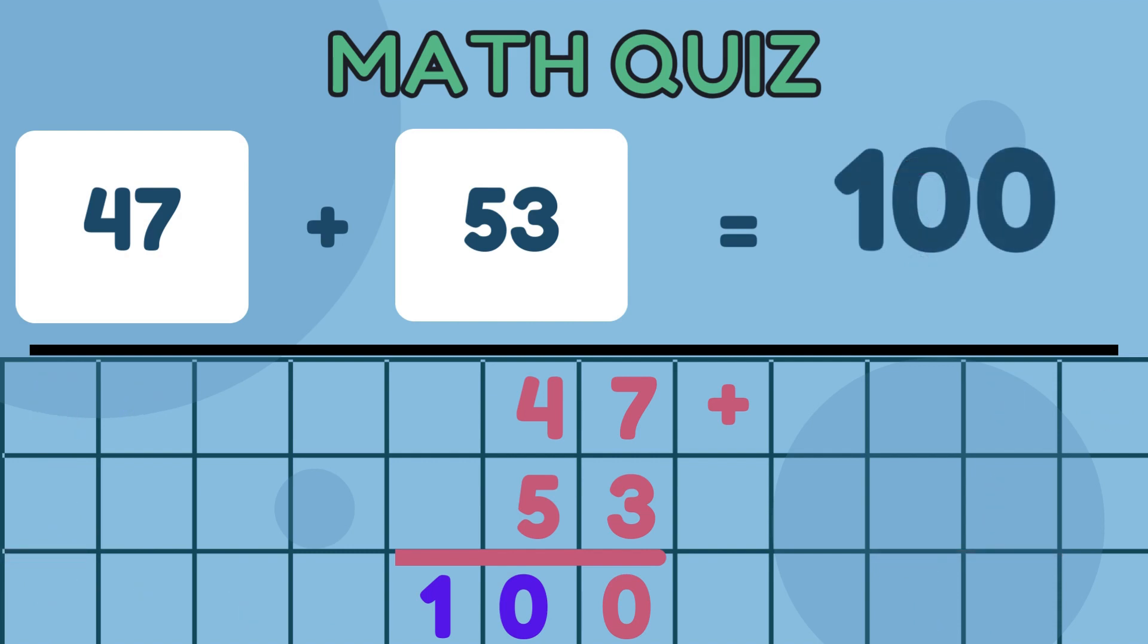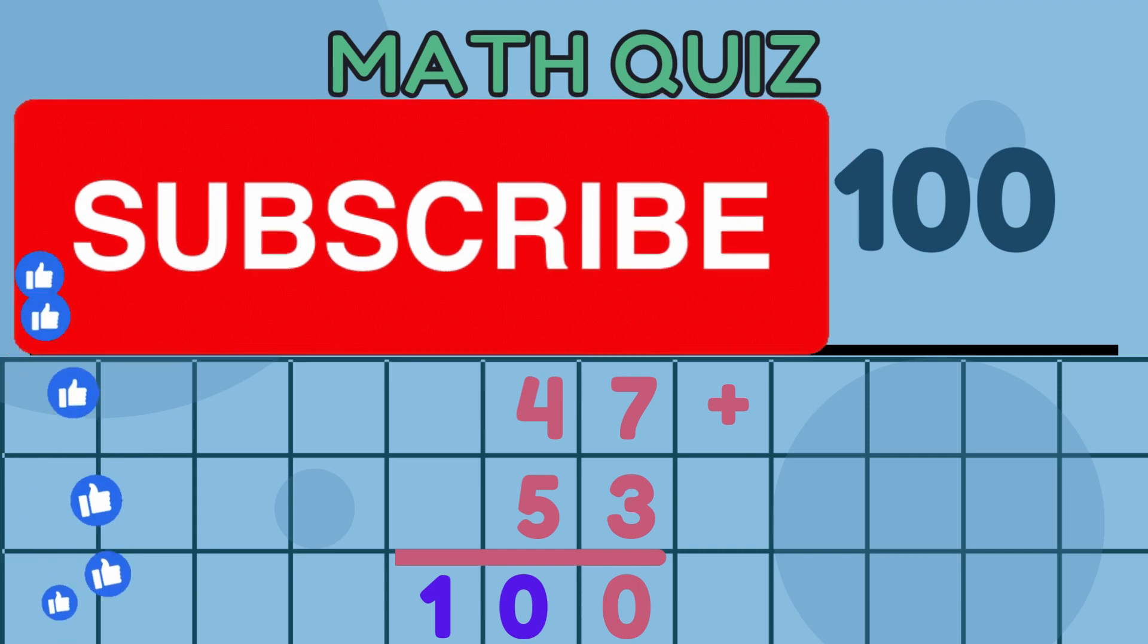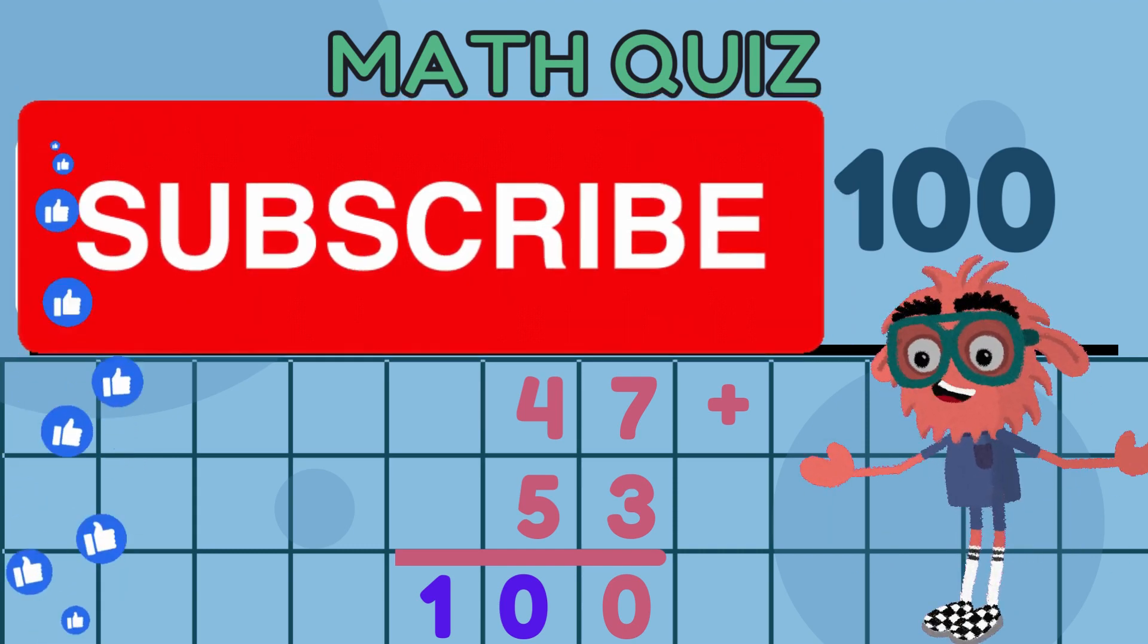That's it. Adding numbers with two digits is as simple as adding the digits in each place value, and carrying over when needed. Keep practicing, and you'll become a master at it.